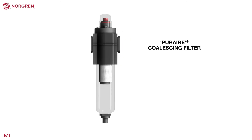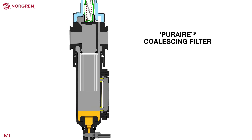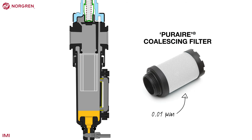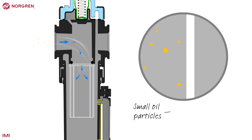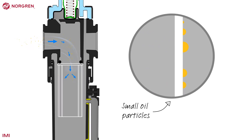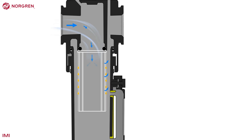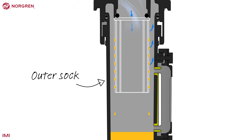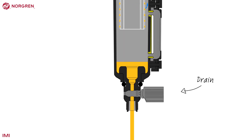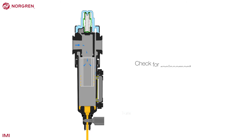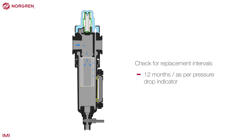Norgren's pure air coalescing filter removes oil and extremely small particles down to 0.01 micron from compressed air. It works by forcing air through an element where it changes direction and bumps into itself, causing any oil to coalesce or stick together, creating bigger drops on an outer sock. As it gathers, it gains mass and gravity forces it downward into the bowl. You will notice a wet band around the sock as the oil gathers and drains into the bowl. Contaminant oil needs to be drained before it reaches the bottom of the element or it will be pulled back into the system. Check for replacement intervals and operating limitations regarding temperature.